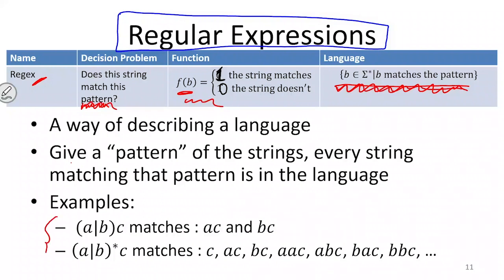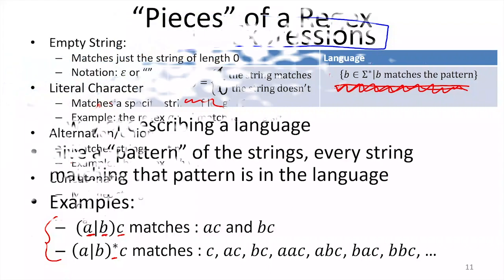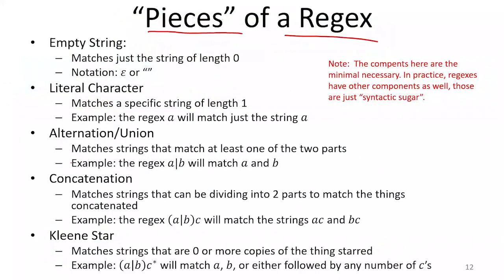The main components of regular expressions are: literal characters (like A, B, C), concatenation of those characters, alternation using the vertical bar — which we can think of as 'or' — and the star, which is the Kleene star meaning zero or more copies of something.